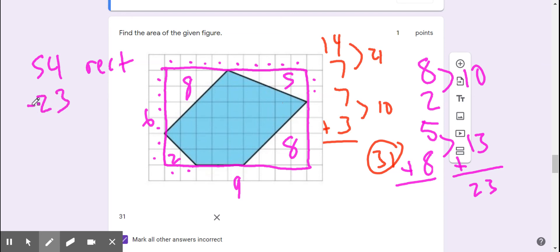I want to subtract that from the rectangle, and that's going to give us the blue space. 54 minus 23 is 31. So you see, either way, we're going to get an area of 31 square units.